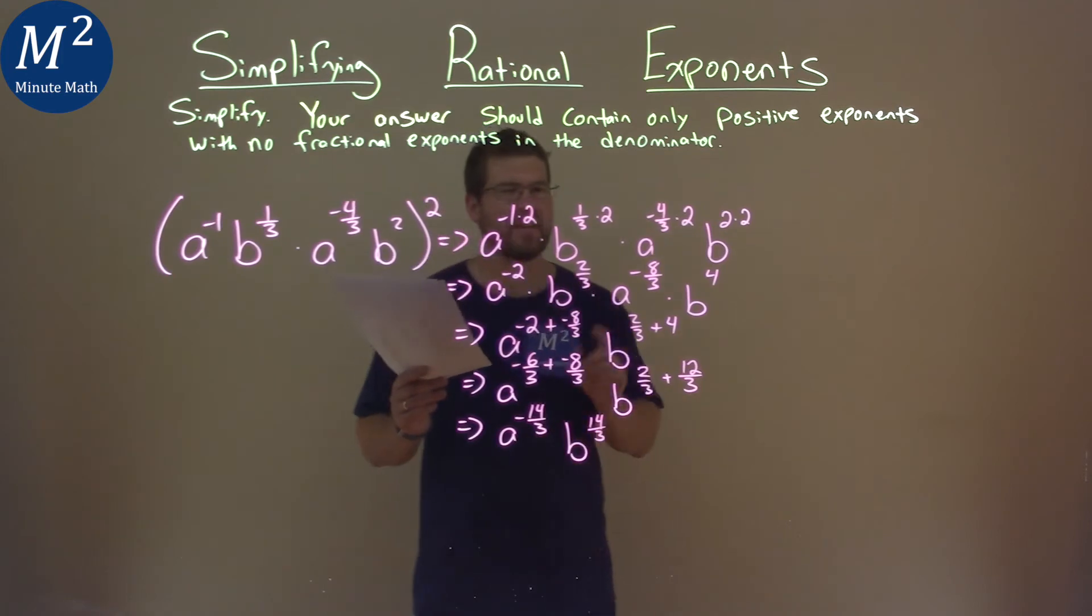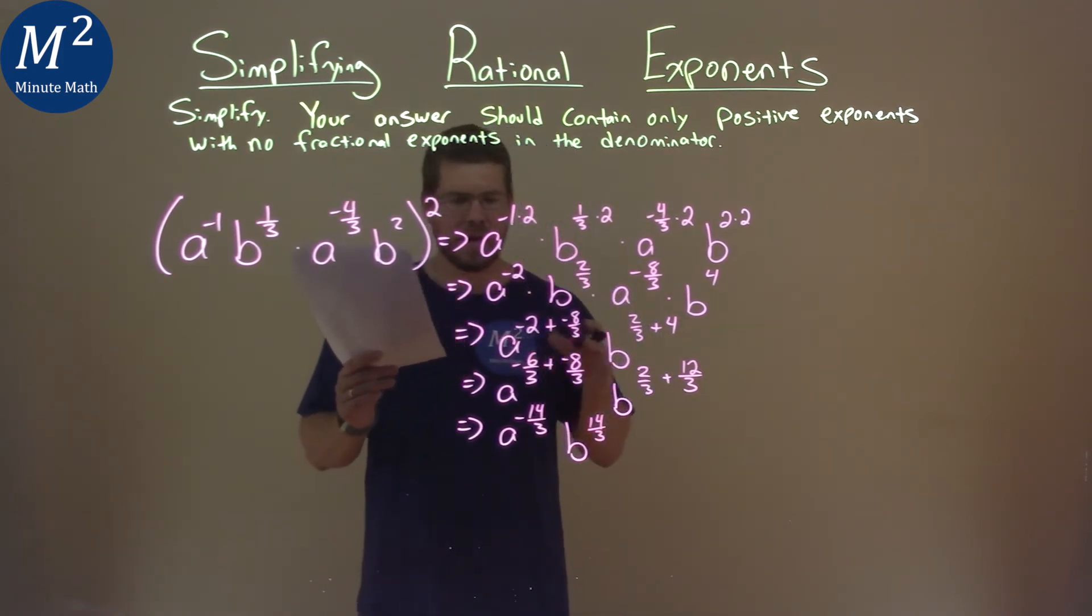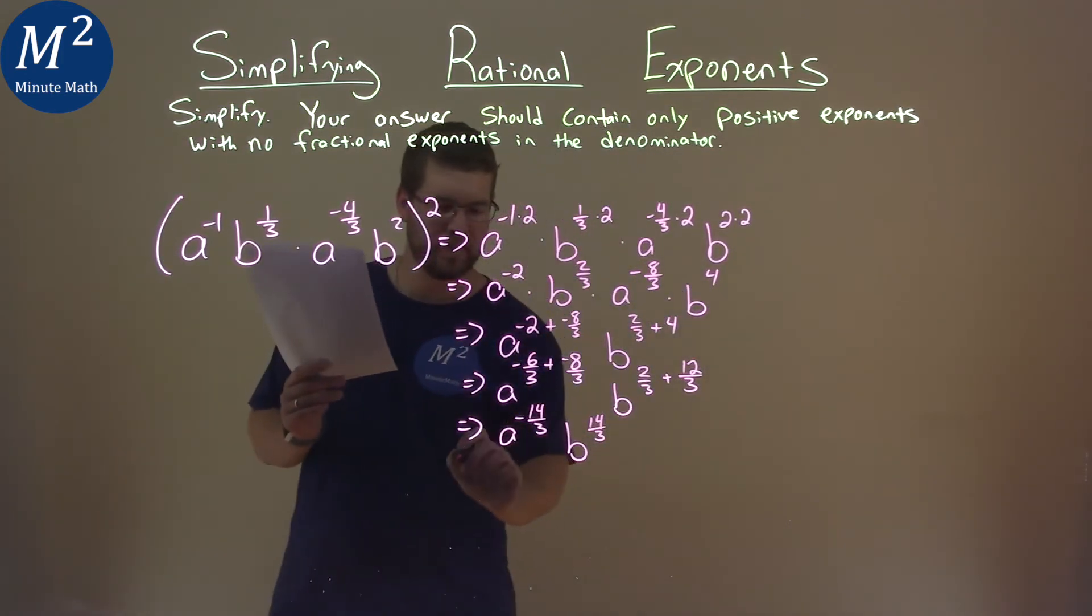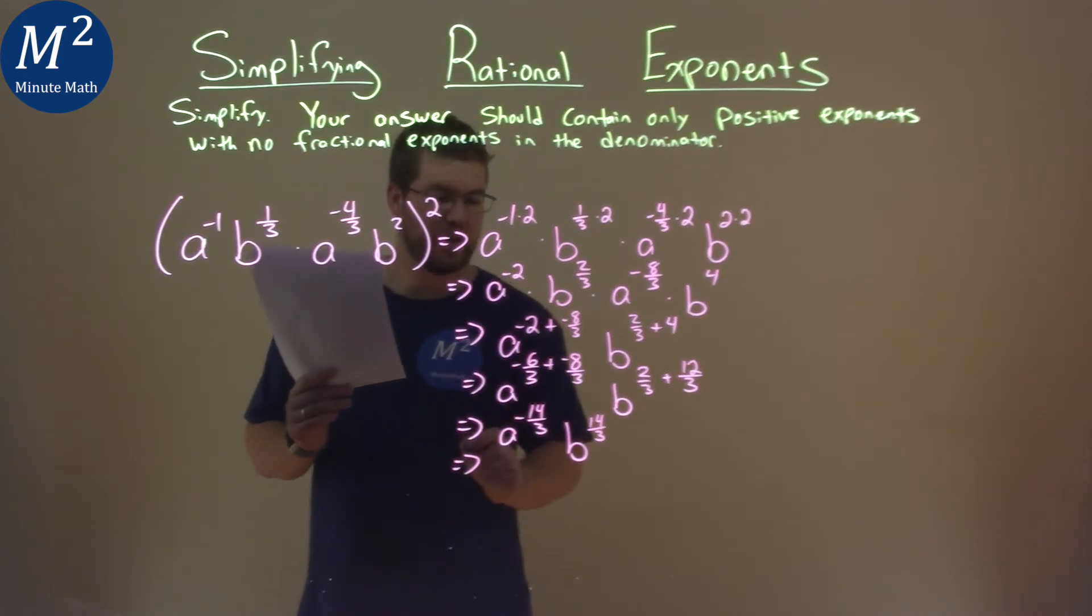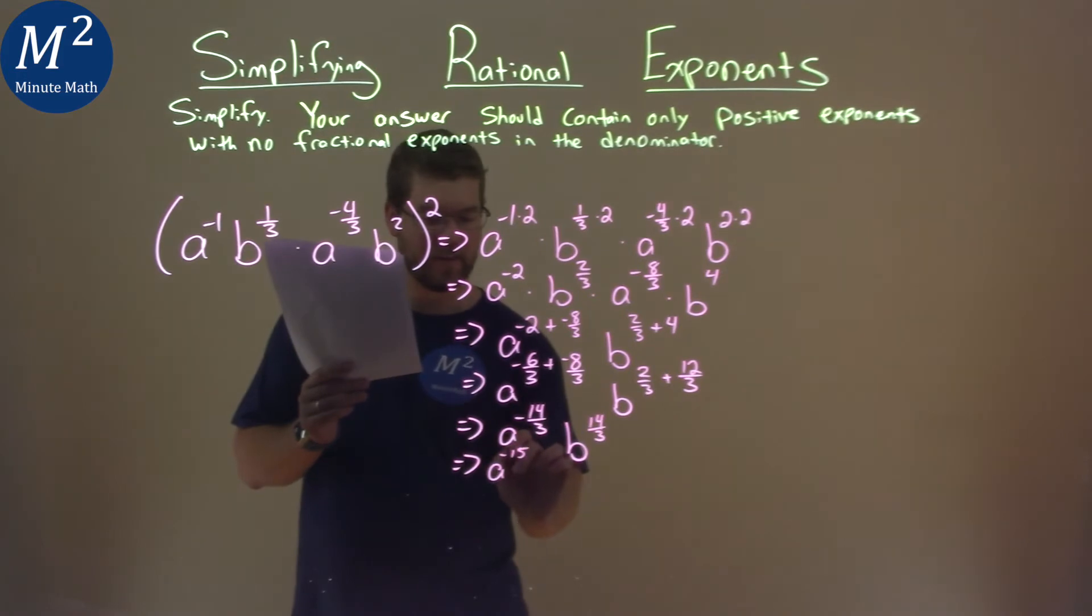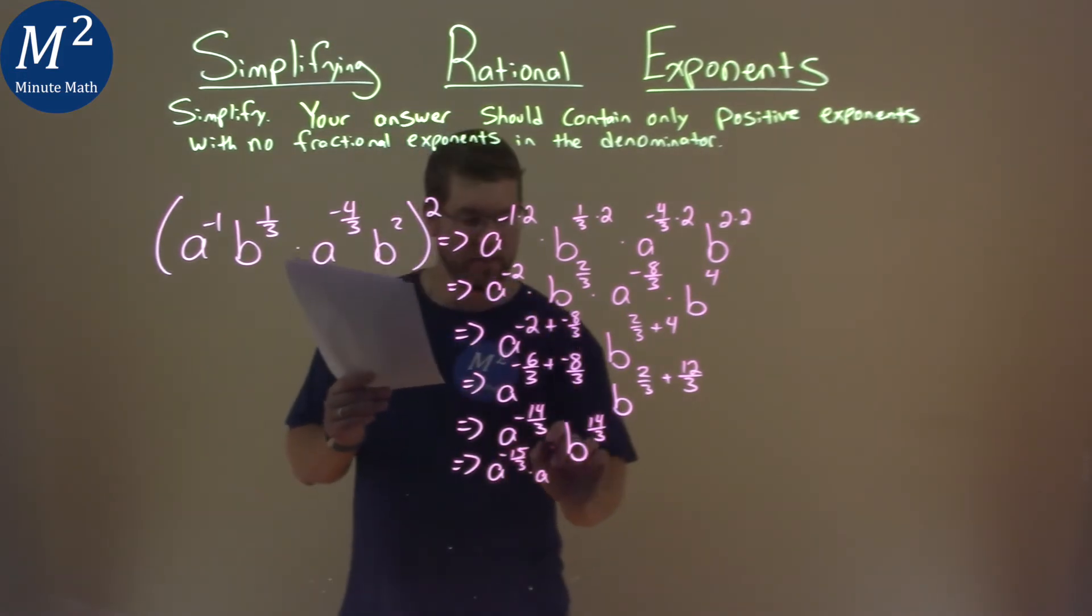All right, this is where it gets kind of tricky. I'm going to show you, breaking down what this really can be. a to the negative 14/3 is a to the negative 15/3 times a to the positive 1/3.